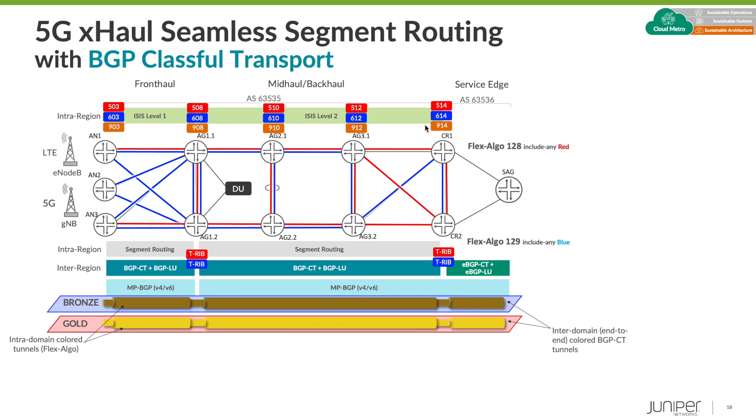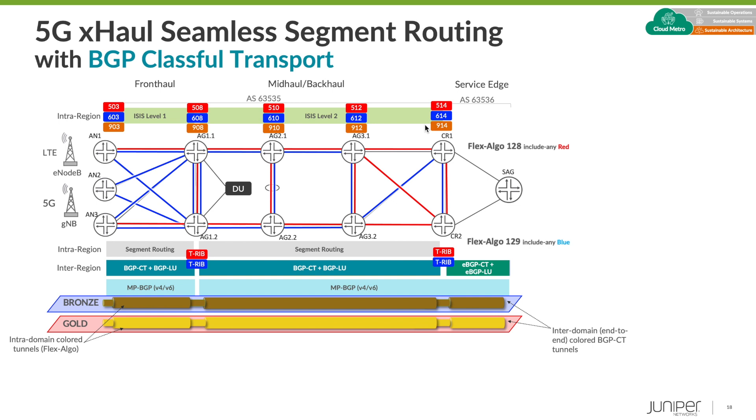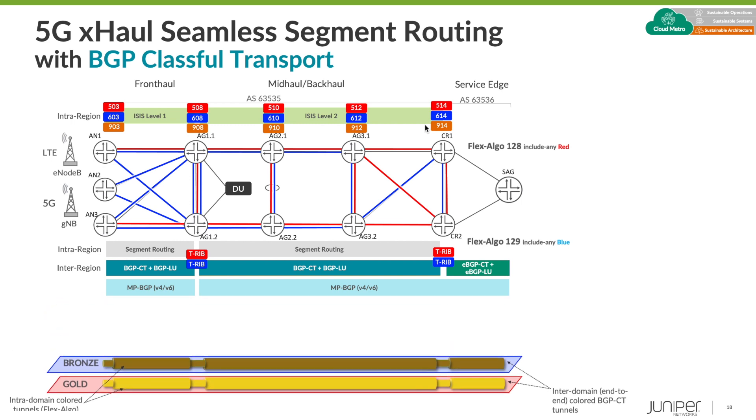Intra-domain colored tunnels are established with Flex Algo and transport class machinery. BGP-CT delivers the interdomain capability to stitch the end-to-end color-aware paths. This solution really enhances the popular seamless MPLS with BGP-LU by taking those color attributes — normally contained within a given IGP domain — and allowing them to easily transcend multiple domains to create a more coherent end-to-end color awareness. There are other ways to accomplish interdomain traffic engineering; this is just one, and it highlights Juniper innovation.